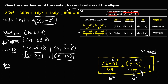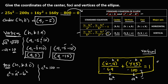For the foci, the formula is (h, k plus or minus c). We first solve for c using the formula c² equals a² minus b². Substituting: c² equals 100 minus 64, so c² equals 36. Taking the square root, c equals positive 6.